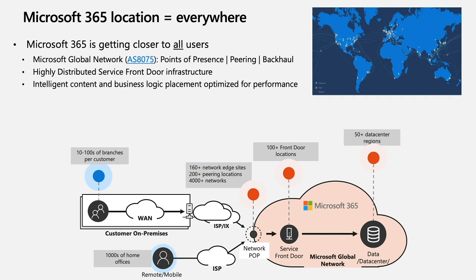In addition to the Microsoft global network, another critical element is the distributed service front door infrastructure. Think of the front door infrastructure as the place where user connections are terminated and most performance-sensitive user experiences are rendered. Finally, another critical ingredient is the intelligent content and business placement that Microsoft 365 performs within its first-mile network to optimize user experience even further. Importantly, this picture is not static — Microsoft 365 is attempting to get closer and closer to users every day, advancing and expanding its network peering locations, front door infrastructure, and distributed data center infrastructure.